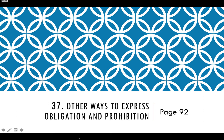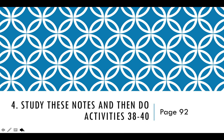On page 92, we have another note about things we can say to express obligation and prohibition — that means things you have to do or things you're forbidden to do. And after you do this, look at activities 38 to 40.